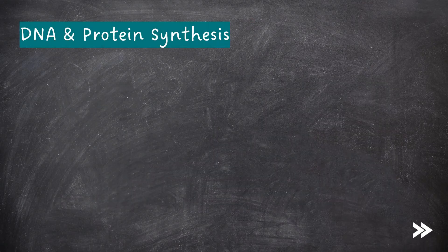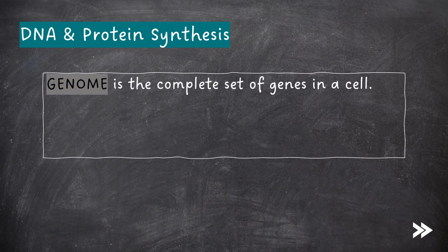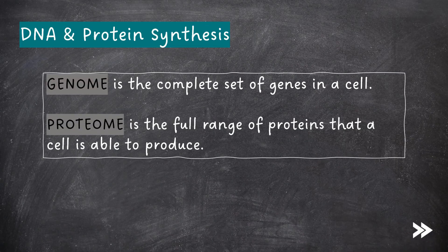So let's make a start. The genome is the complete set of genes in a cell. The proteome is the full range of proteins that a cell is able to produce.